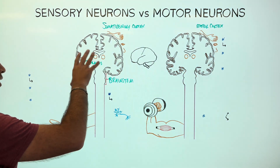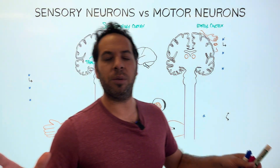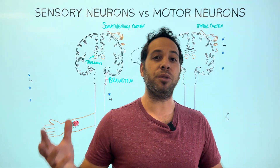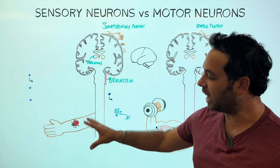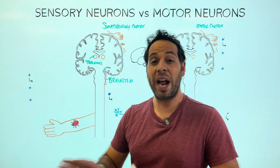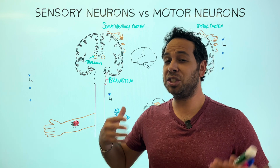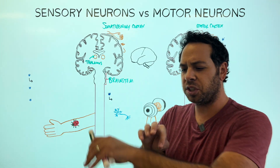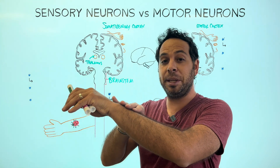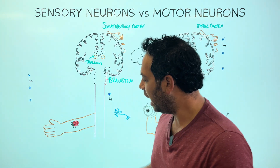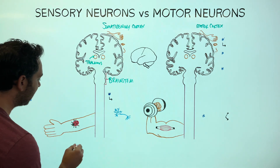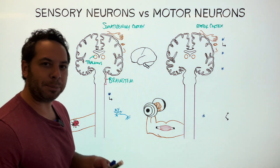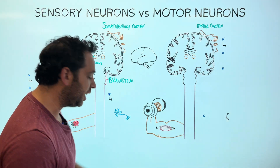Let's start with the sensory pathway. Here's our scenario: you're walking along, hiking on a trail, everything's beautiful, and all of a sudden a ladybug lands on your arm. At this moment, your brain doesn't know that a ladybug has landed — all it knows is there's some sort of stimuli from the outside world, which is activating what we call sensory receptors.